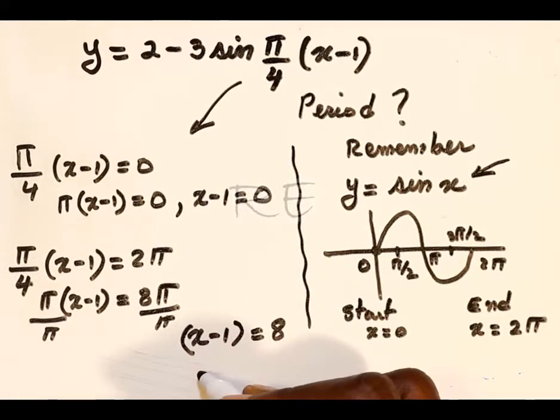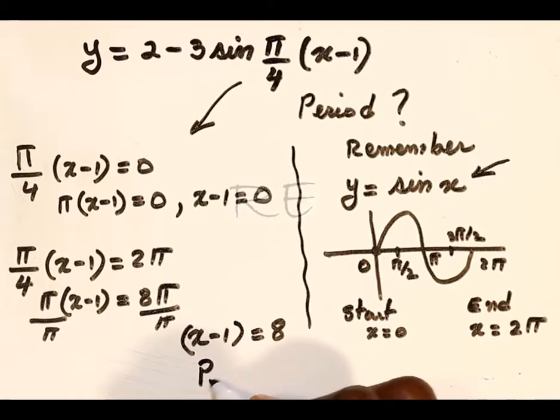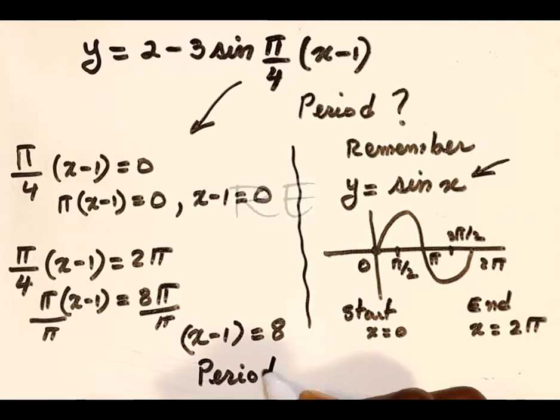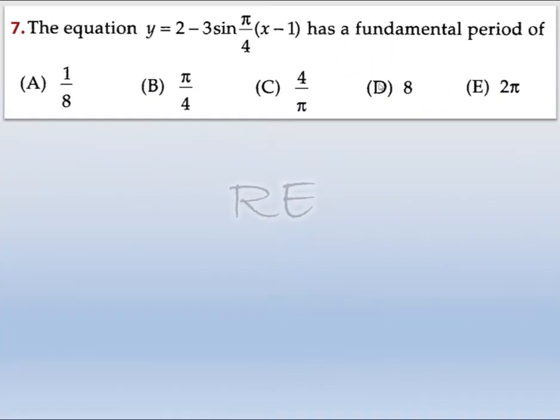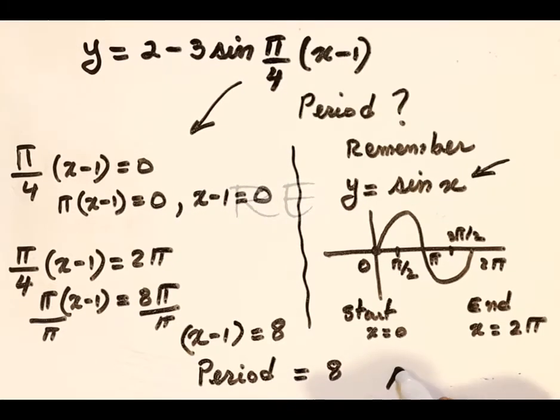So the period is equal to 8. The correct answer is D in David. So we done. Bye.